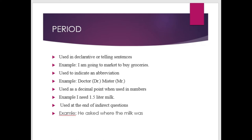For abbreviations, look at the words: doctor becomes 'Dr.' and mister becomes 'Mr.' Full stop can also be used as a decimal point when used in numbers — for example, 'I need 1.5 liter milk.' Full stop or period can also be used at the end of indirect questions, for example: 'He asked where the milk was.'